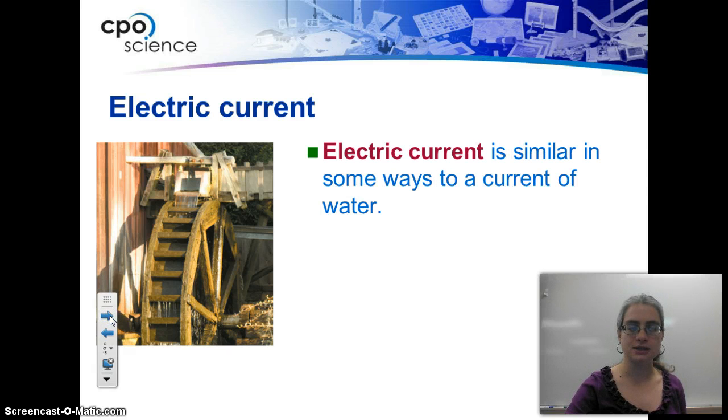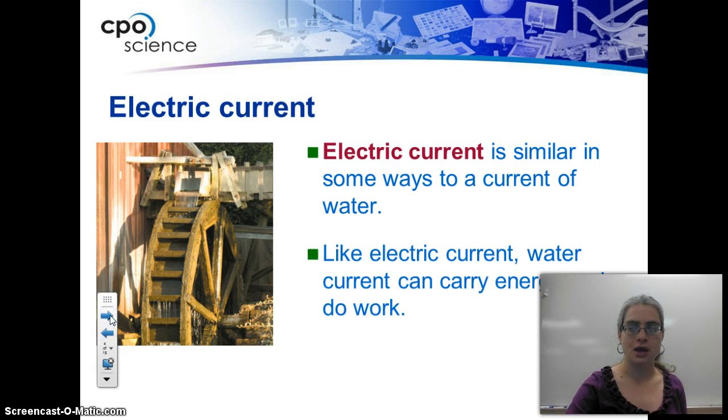So the best analogy we can do for people who are not electricians is that electric current is like water or a water wheel. Water can carry energy and actually do work. That's how we get power. That's how we get electricity, is the electric current doing work on filaments, electric current doing work on computers, etc.